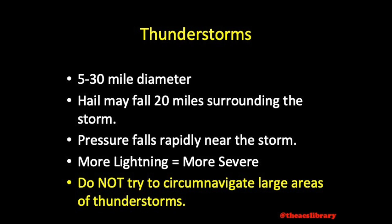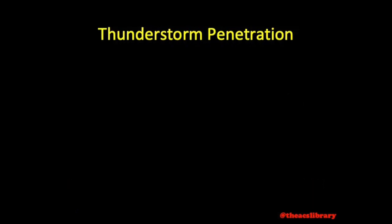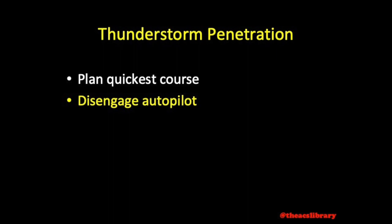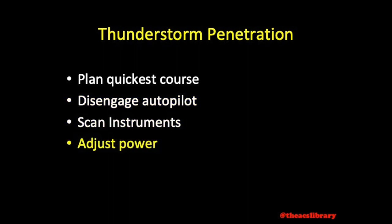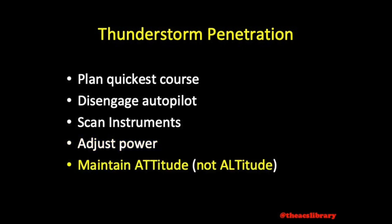Do not try to circumnavigate thunderstorms covering large areas visually or by radar, as thunderstorms build and dissipate rapidly. If you must fly through a thunderstorm, plan the quickest course through the storm and hold it. The recommended procedure to lessen aircraft stress is to disengage autopilot, keep your eyes on the instruments, and adjust power to the recommended reduced power setting. Because it is nearly impossible to maintain altitude in a thunderstorm and structural damage may occur if the aircraft is forced to do so, maintain attitude rather than altitude, riding the waves of the thunderstorm.